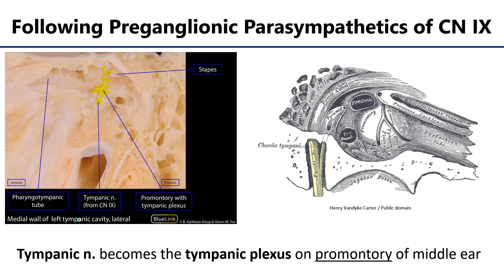Here we're looking at the middle ear space, and we can see the tympanic nerve coming up and ramifying into a bunch of fibers all over this area, which is the promontory, and then they come back together as the lesser petrosal nerve. Here you can see the promontory, here's the tympanic plexus, and there it is coming together as the lesser petrosal nerve.